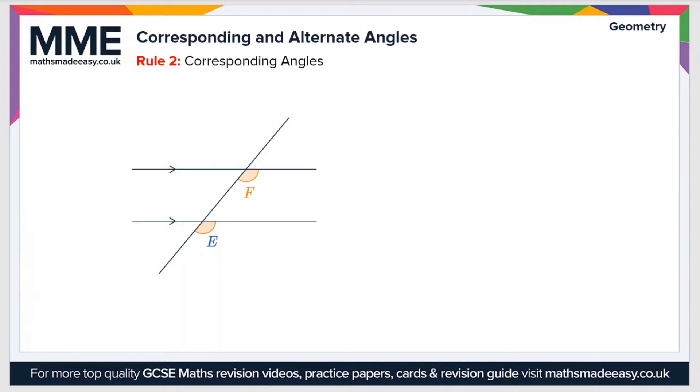Moving on to rule number two, that's corresponding angles. Corresponding angles are sometimes known as F angles because they form this F shape. In this case we have angles E and F, and corresponding angles are also the same. So in this case E equals F.